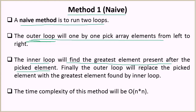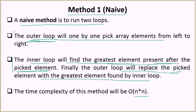The inner loop runs from the element next to the one being processed by the outer loop, which is why it checks for the greatest element present after the picked element. After the inner loop is done, the outer loop replaces the picked element with the largest element found. The time complexity of this solution is O(n²) because we have one outer loop with one inner loop inside it.